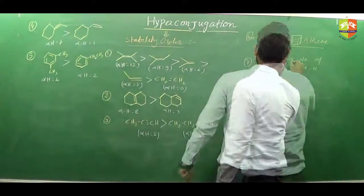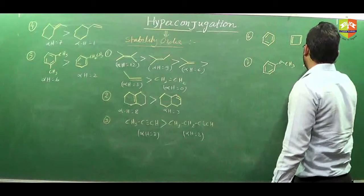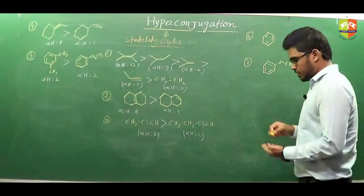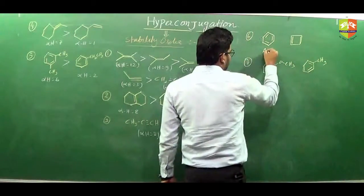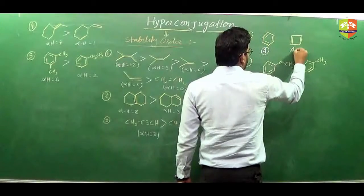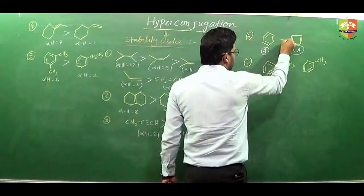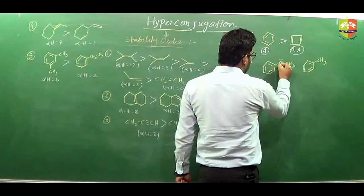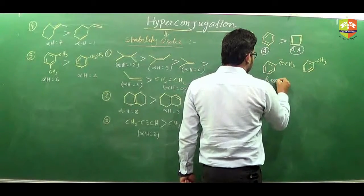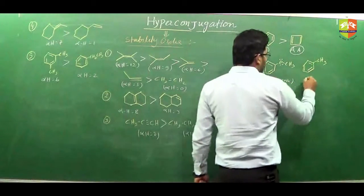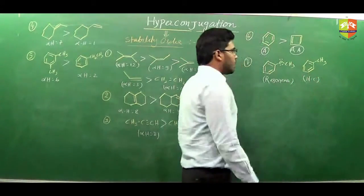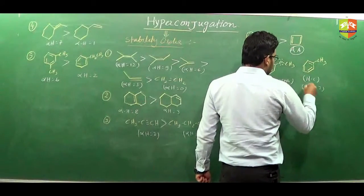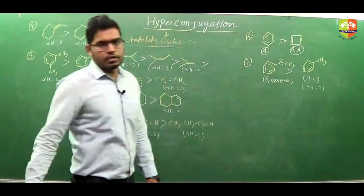A few more examples: one compound has OCH₃ and another has CH₃. You can see one is an aromatic compound and the other is anti-aromatic, so the stability order follows from that. For the OCH₃ compound, oxygen has a lone pair, so resonance is possible. For the CH₃ compound, hyperconjugation applies with 3 alpha hydrogens. Since resonance is more dominating than hyperconjugation, the stability order is accordingly determined.